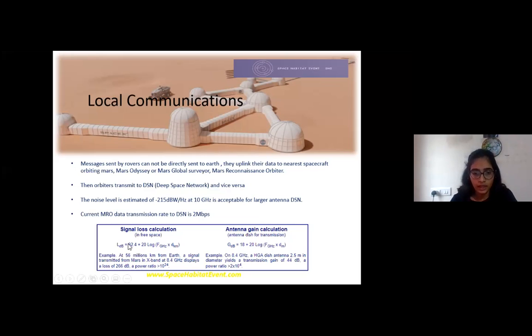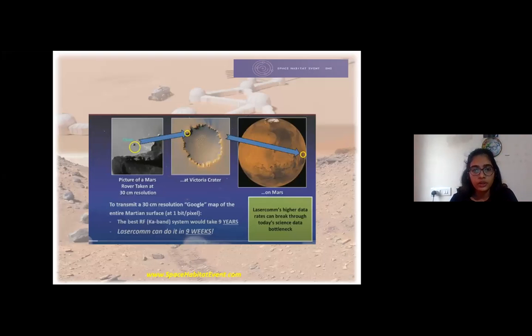With radio, the signal loss is very high. The practical noise level is estimated around -215 dB watts per hertz at 10 gigahertz. For this we need a very large amount of bandwidth, which is not possible right now. Signal-to-noise ratio and antenna gain both play important roles for high data transmission as well as reducing the signal noise and increasing the spectrum efficiency.